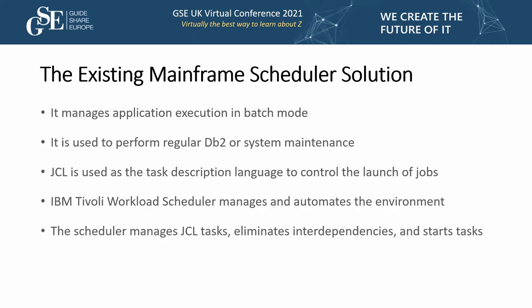Your application on the mainframe runs either in transactional mode or batch mode. If it's a data warehouse, it can consist of many batches — for example, regular DB2 housekeeping or other maintenance tasks. JCL is a job description language with minimal expressive properties, essentially a programming language. IBM Tivoli Workload Scheduler provides the ability to manage the production environment and automate many operator actions.